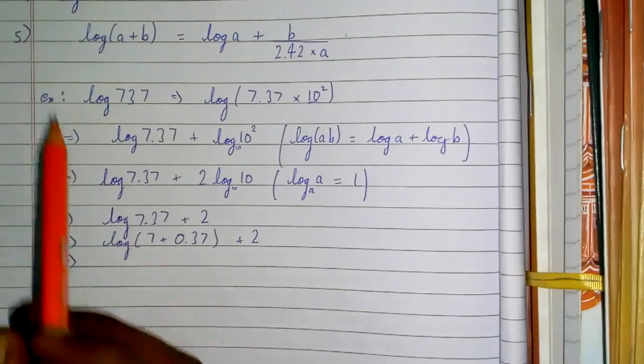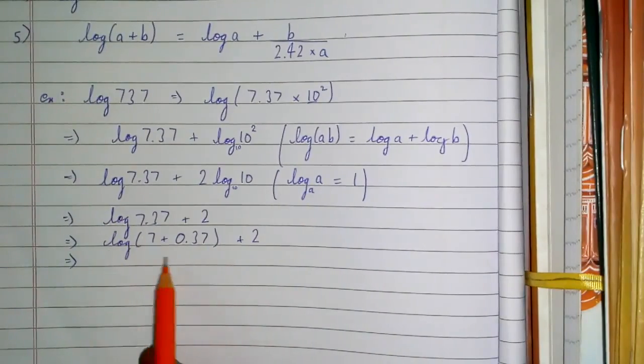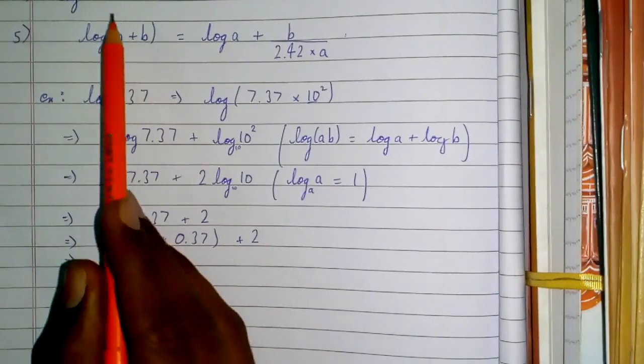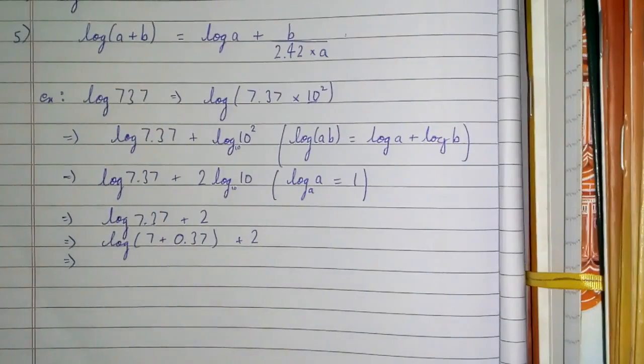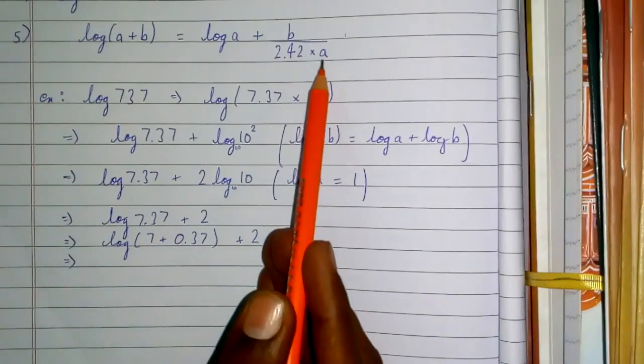We know the value of log 7, but before that you'll notice this is in the form of the formula written above: log(a+b). So use this formula: log a + b/(2.42×a).